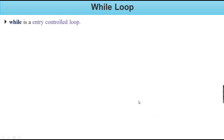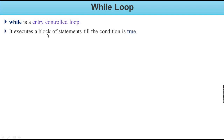While loop — the statement executes a number of times. A while is an entry controlled loop. It executes a block of statements till the condition is true, and the Java statement executes a number of times when a condition is true.